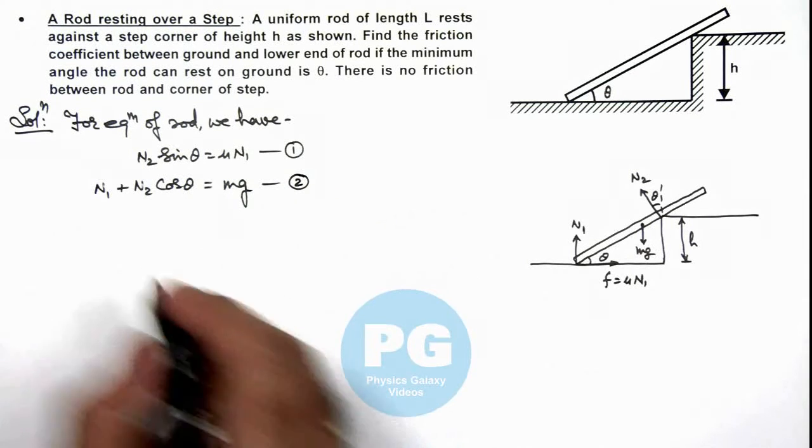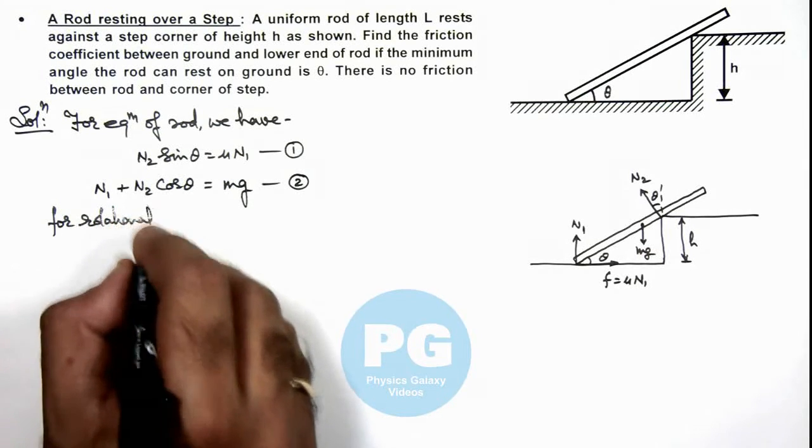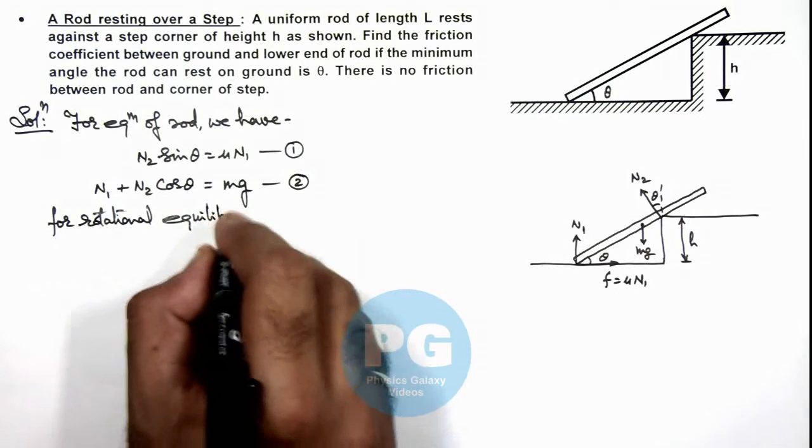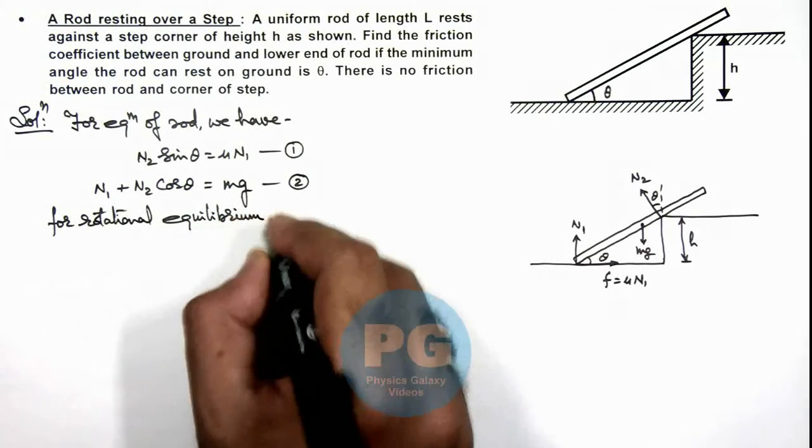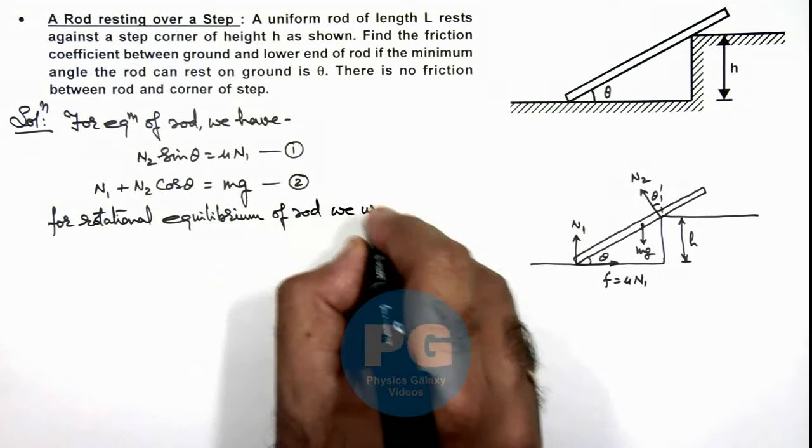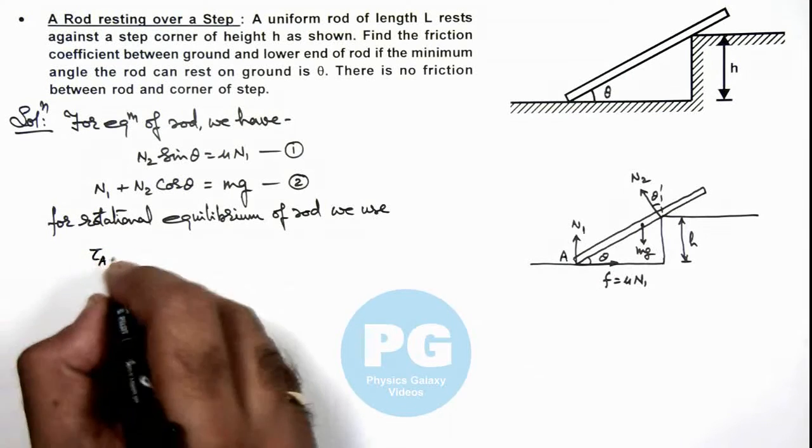And for rotational equilibrium of rod we use, if this point is A, we can calculate the torque about point A.